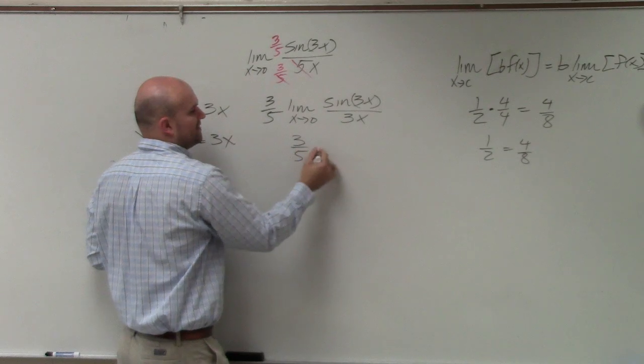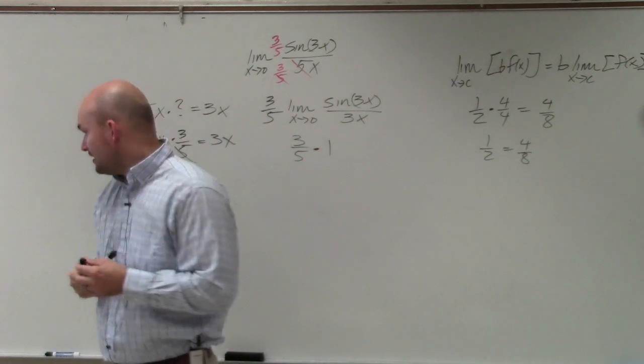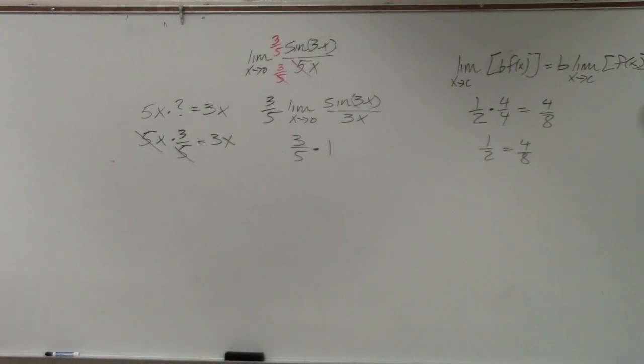So we're just left with 3 fifths times 1. And 3 divided by 5 is, looks like I'm getting there really close. That's 0.6.